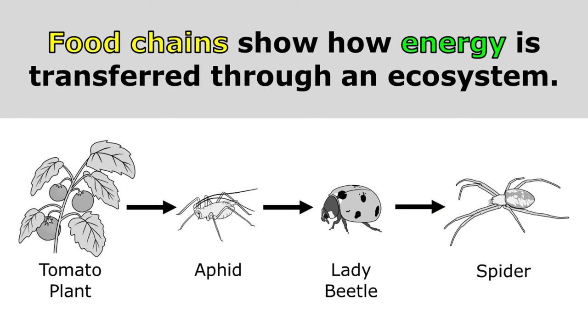Food chains show how energy is transferred through an ecosystem. In this food chain, we can see that energy is transferred from the tomato plant, to the aphid, to the lady beetle, and to the spider.